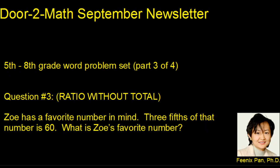Welcome to the Door-to-Math September Newsletter. This is part three of four where we solve middle school fifth through eighth grade word problem set. The question here we're dealing with is, Zoe has a favorite number in mind. Three-fifths of that number is 60. What is Zoe's favorite number? So let's go right to the blackboard and solve this problem.